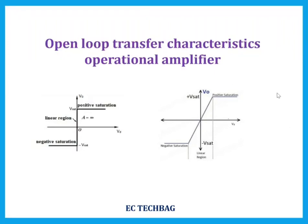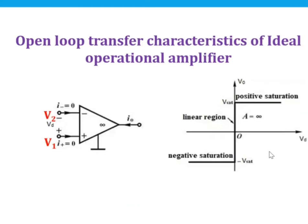Welcome back to my channel. In this video we will see the open-loop transfer characteristics of an operational amplifier. First, we will look at the ideal operational amplifier. The gain of the ideal operational amplifier is infinity, and it draws no current from the source — the input current entering the operational amplifier is zero. This shows the ideal operational amplifier and its transfer characteristics.